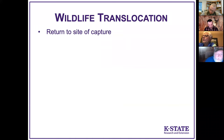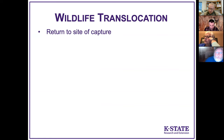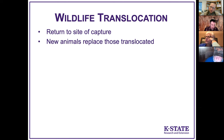Wildlife translocation is what we call catching an animal and taking it somewhere else. This is often what folks want because they feel lethal control is not humane. But there are lots of considerations. Many times when we remove critters, they return to the site of capture — you have to move animals much farther than you'd think. A mountain lion needs to be moved 150 miles to keep it from returning. Also, new animals often replace those that are translocated — if there's a resource they want, a new animal will likely show up.